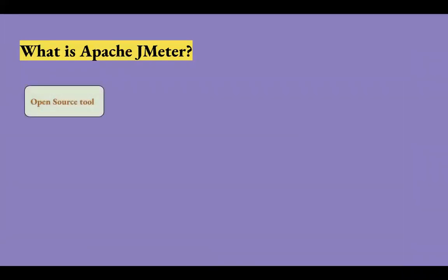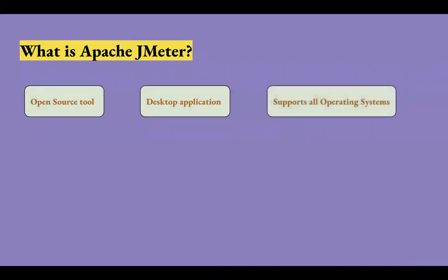Apache JMeter is an open source automation tool used for performance testing and it is one of the most preferred tools. It is basically a desktop application you need to download on your system to work on it. It is built on Java technology so it supports all operating systems like Windows, Linux, Mac, and Ubuntu.